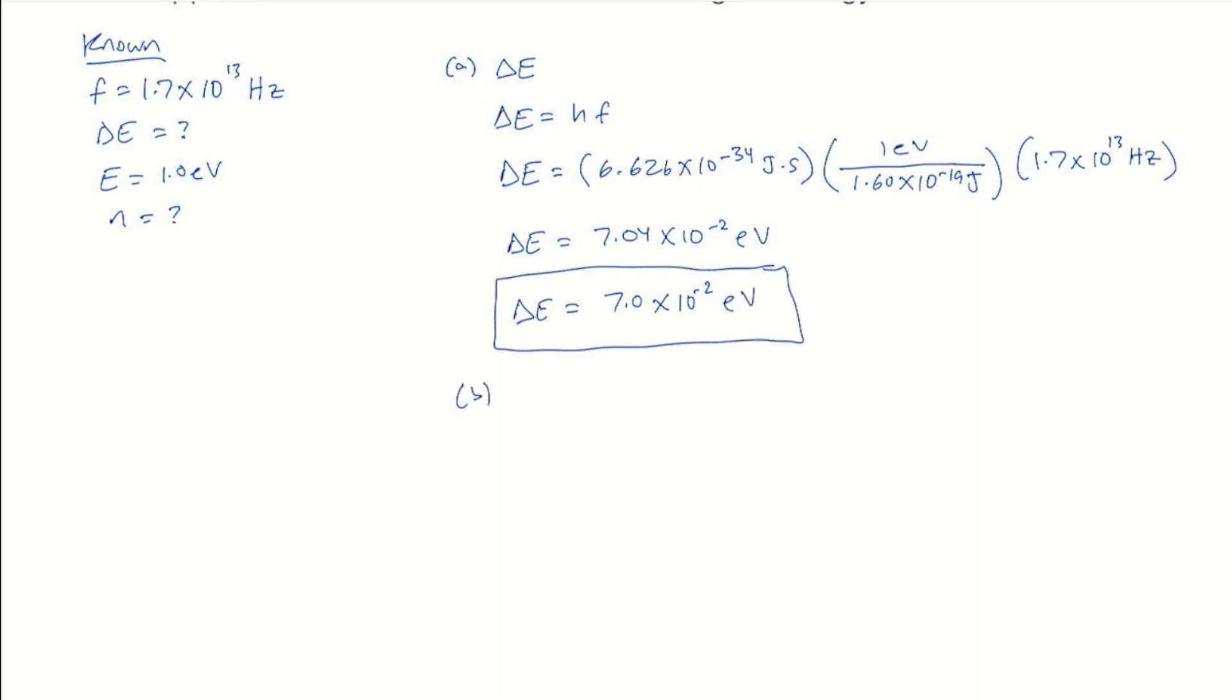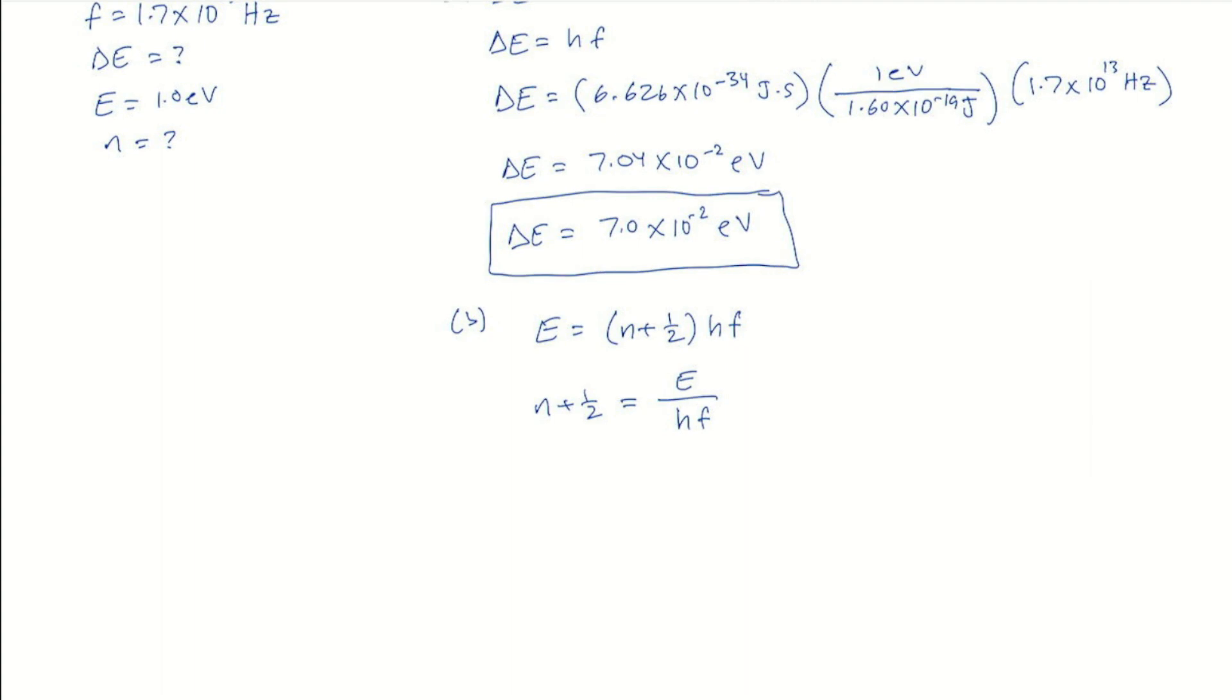Now for part b, we need to find n, and we can use the equation E equals the quantity n plus 1/2 times hf. So we'll solve for n. That's going to be E divided by hf minus 1/2. And so n is going to be E divided by hf minus 1/2.